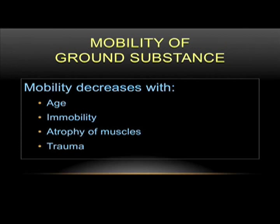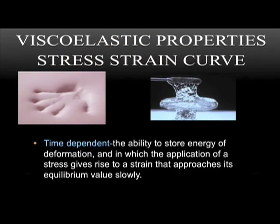Mobility of ground substance is decreased with age, immobility, atrophy of muscles, and trauma. One of the mechanical properties of soft tissue is its viscoelastic nature, which we think about from school with the stress-strain curve. We have pictures here showing memory foam, which is a type of viscoelastic material, and a gel-like substance that has a lot of fluidity but is still in a form.